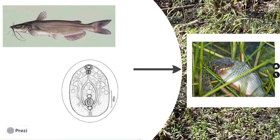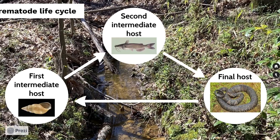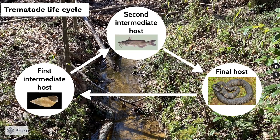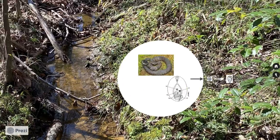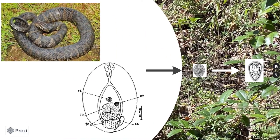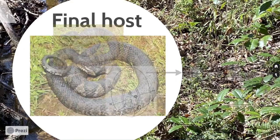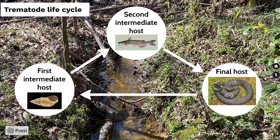The trematode is transmitted to the final host — in this case a banded water snake — when it eats the second intermediate host fish. In the final host snake, the trematode grows into an adult, which produces eggs that are released into the water column in search of a snail to begin the life cycle again.